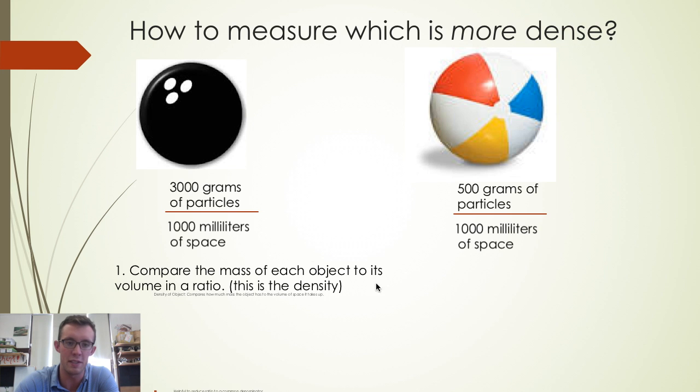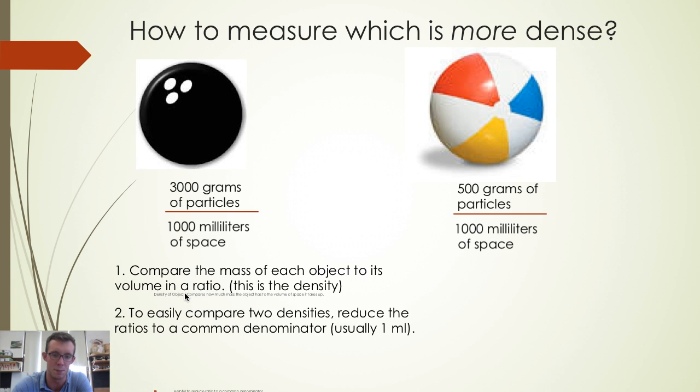If we want to be able to compare these two densities to see which one is higher, we need to do just like you would in your algebra class: reduce these ratios to a common denominator, and this will usually be 1 milliliter in our class. So 3,000 grams of particles in 1,000 milliliters of space will reduce to 3 grams for every 1 milliliter of space.